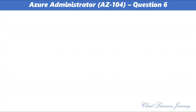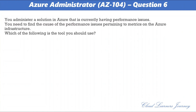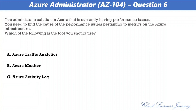Question number 6. You administered a solution in Azure that is currently having performance issues. You need to find the cause of the performance issues pertaining to metrics on the Azure infrastructure. Which of the following is the tool you should use? The options are: a) Azure Traffic Analytics, b) Azure Monitor, c) Azure Activity Log, d) Azure Advisor. The correct option is b, Azure Monitor. Metrics in Azure Monitor are stored in a time series database optimized for analyzing timestamp data, making metrics well-suited for alerting and fast detection of issues.